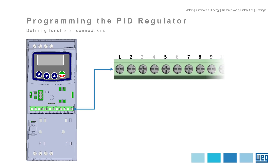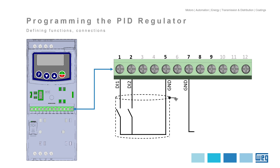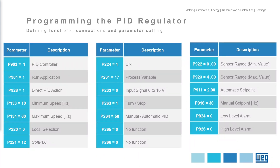This was the control connection made in our example, where we use DI1 as run-stop and DI2 as manual-automatic. Our pressure transducer was simulated by the analog potentiometer connected to analog input AI1. And here is the step-by-step programming performed in the example, with the parameter, description, and content used in each parameter.